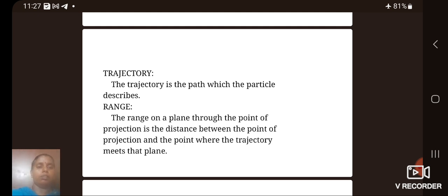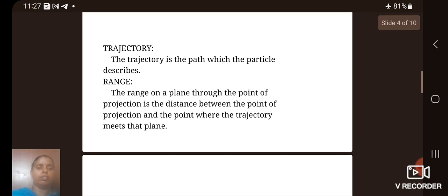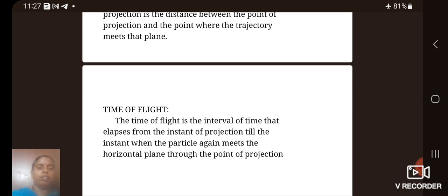The range on a plane through the point of projection is the distance between the point of projection and the point where the trajectory meets that plane.